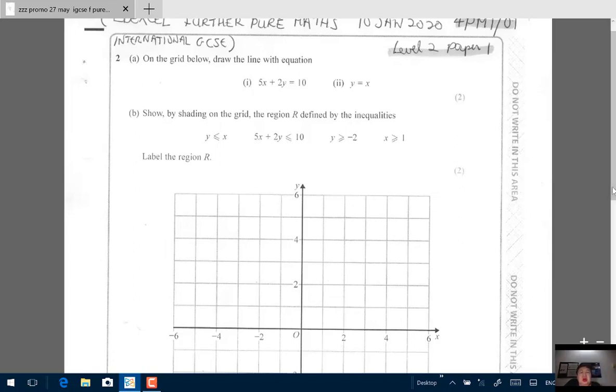It says on the grid below, draw the line with equation 5x plus 2y equals 10. 5x plus 2y equals 10 is a linear equation, a straight line. So to draw any straight line, you need only two points which you join together. So pick any point you like for x and pick any point you like for y.